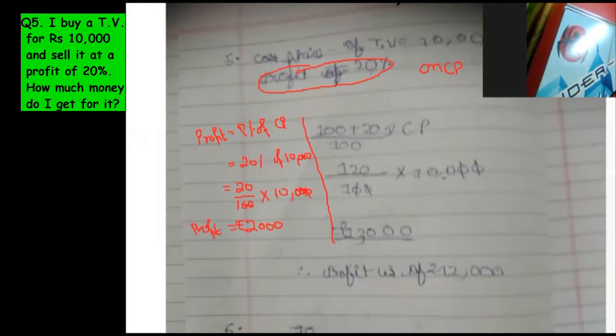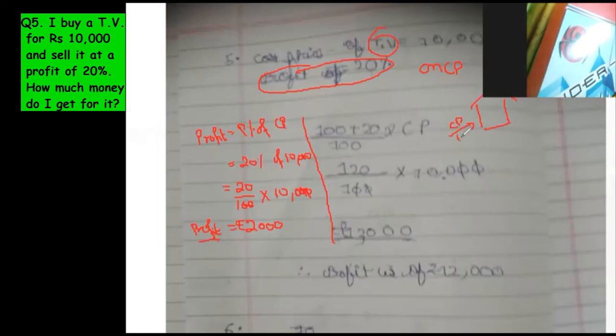Now, on this transaction, on this TV, profit is 2,000. Not 12,000. Profit is 2,000. I have purchased something for 10,000, and while selling it, I'm getting a profit of 2,000. So that means I will sell it at cost price plus profit.